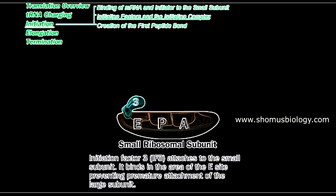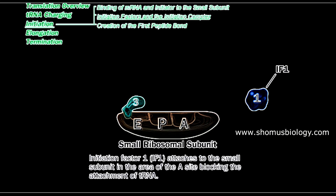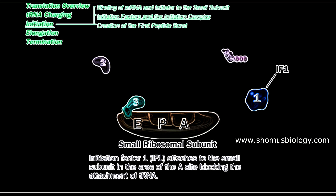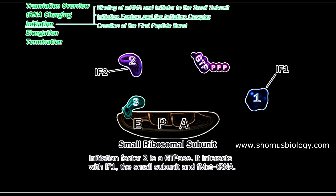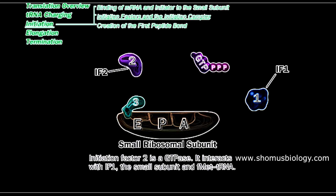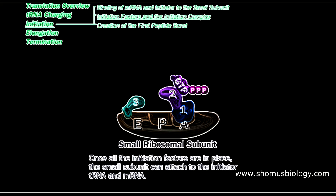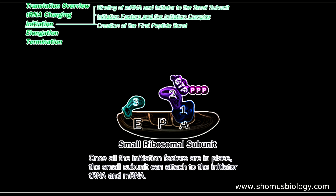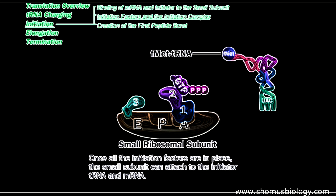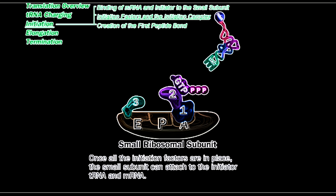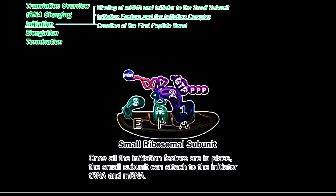Initiation factor 1 (IF1) attaches to the A site of the small subunit. Initiation factor 2 (IF2), a GTPase, interacts with IF1. With IF1 sitting in the A site, only the P site is free, where the first formylated methionine-carrying tRNA binds. This tRNA attaches itself to the P site.